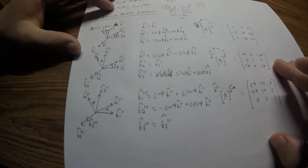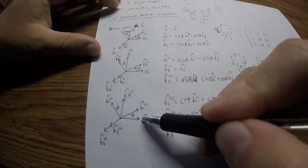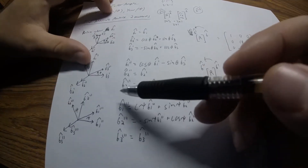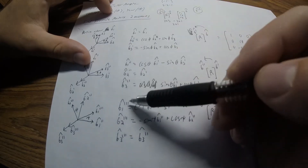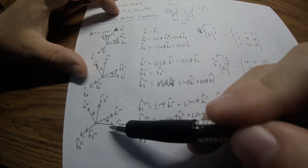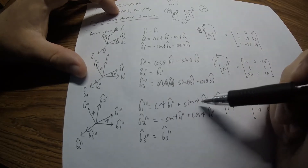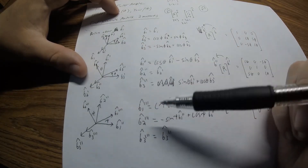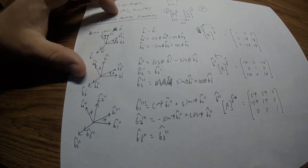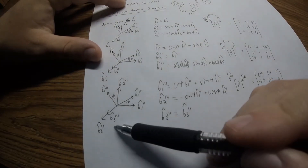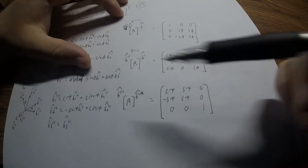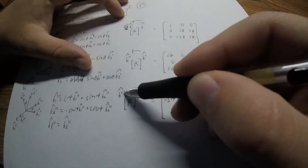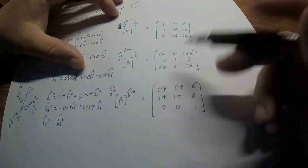Our third and final rotation is about the third axis at angle psi. This takes our second intermediate frame into the final frame B triple prime. B1 triple prime equals cosine psi times B1 double prime plus sine psi times B2 double prime. B2 triple prime equals negative sine psi times B1 double prime plus cosine psi times B2 double prime. B3 triple prime equals B3 double prime. This gives the rotation matrix from B double prime into B triple prime.